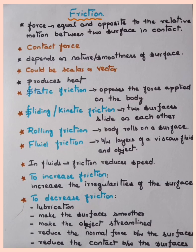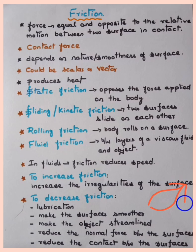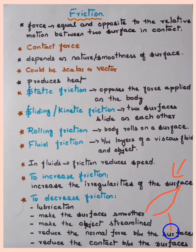By making the surface smoother, we can decrease friction. Another method is to make the object streamlined. You may have observed the streamlined shape in an aeroplane — at the front portion of the aeroplane, this shape ensures that the fluid coming in contact with the surface has very little resistance, so the object can move freely.